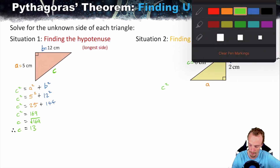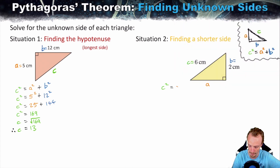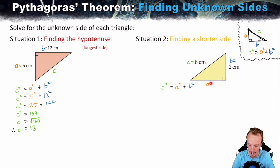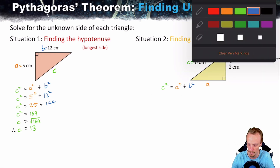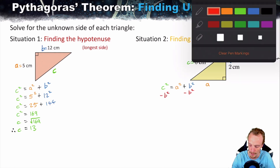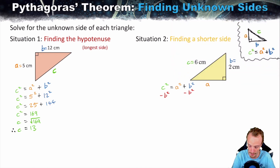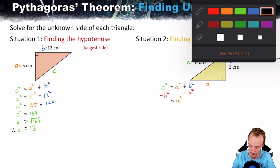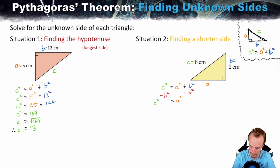Step two: write out the formula — C squared equals A squared plus B squared. Now we need to look at the formula and identify what we're after: we want A, not C. So we need to move B squared to the other side. Since B squared is being added on the right side, we subtract B squared from both sides. This leaves us with A squared equals C squared minus B squared.